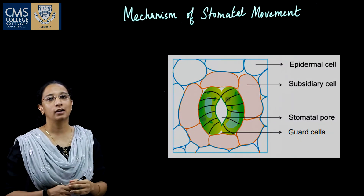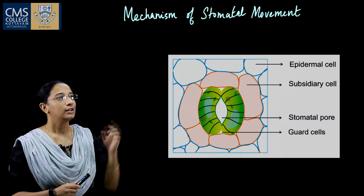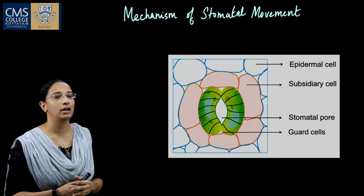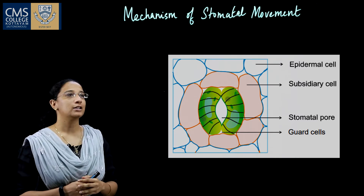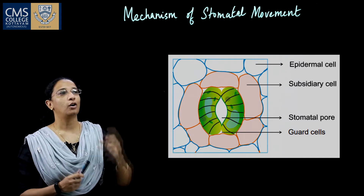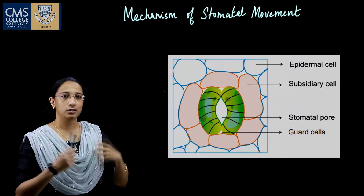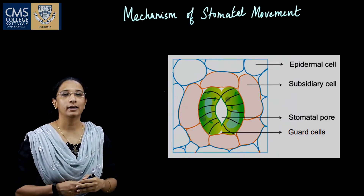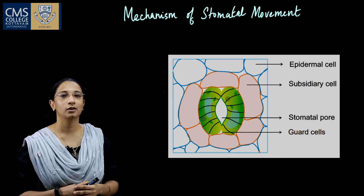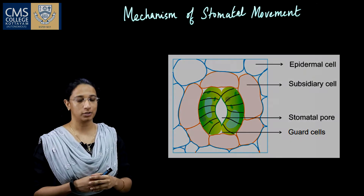Stomata has an opening which is known as the stoma. It is flanked on both sides by two cells known as the guard cells. The guard cells are surrounded by epidermal cells which we call subsidiary cells. When the guard cells become turgid, the stomata is open. When the guard cells become flaccid, the stomata is closed.